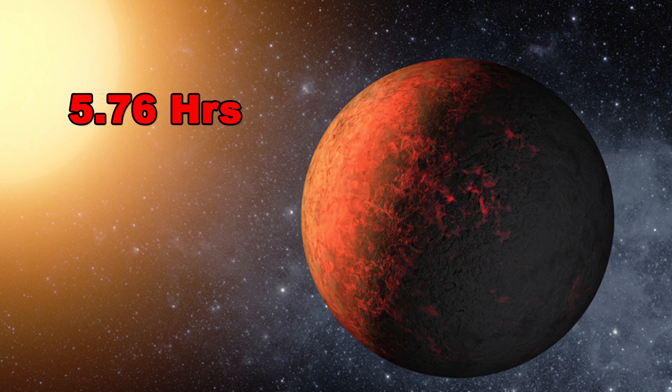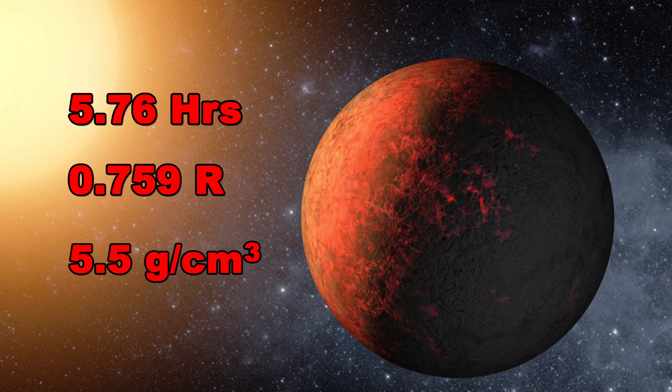It orbits its whole star every six hours, is three-quarters the size of Earth, but has roughly the same density, implying that its iron core must be substantial.